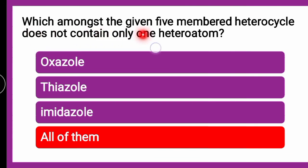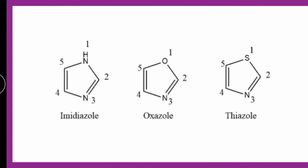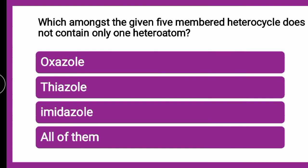The next question is — which amongst the given 5-membered heterocycles does NOT contain only one heteroatom? Amongst these, which 5-membered heterocycle does not contain only one heteroatom — whether it is oxazole, thiazole, imidazole, or all of them? The correct answer is all of them. Oxazole contains oxa and aza; imidazole is a diazole with two nitrogens at positions 1 and 3; thiazole contains thia and aza — sulfur and nitrogen. So all three 5-membered heterocycles contain more than one heteroatom.